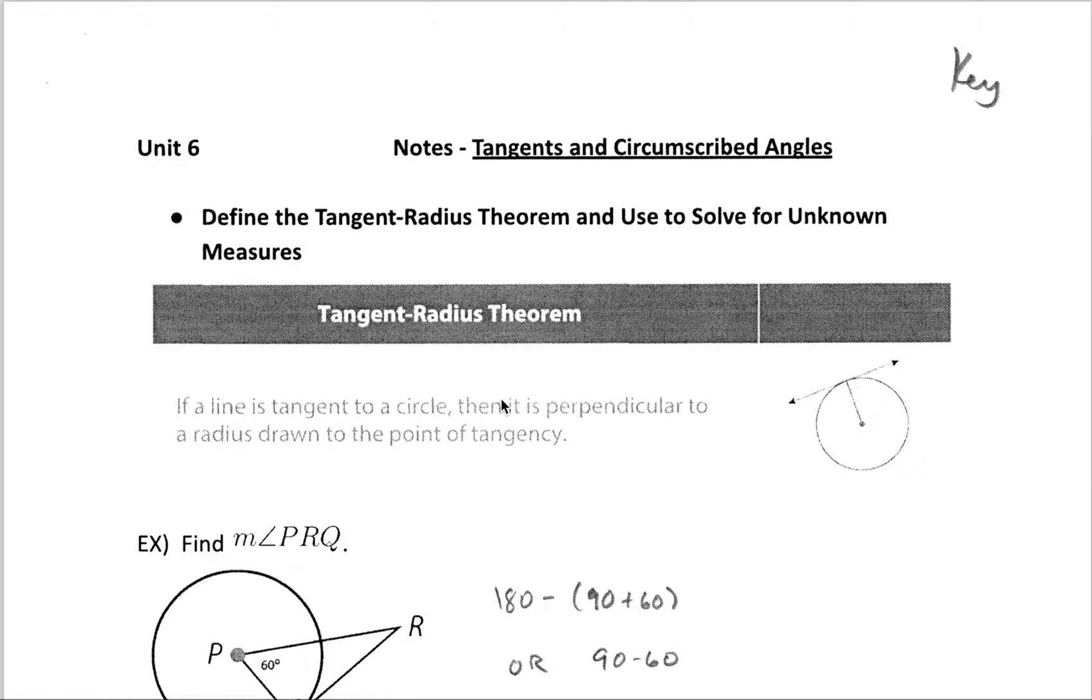In this video we're going to be talking about how tangent lines can create what are known as circumscribed angles and how the properties that result from that relationship can help us solve for some unknown measures.